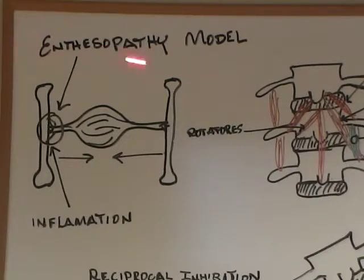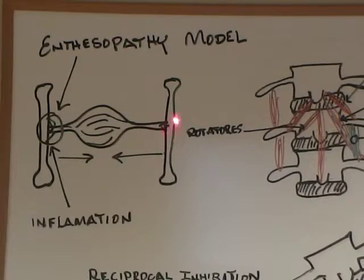Let's start with enthesopathy, this enthesopathy model. Here we have two bones, and between the two bones there is a muscle. The muscle is attached to the bones by tendons, and the point where the attachment occurs is the point of focus here.